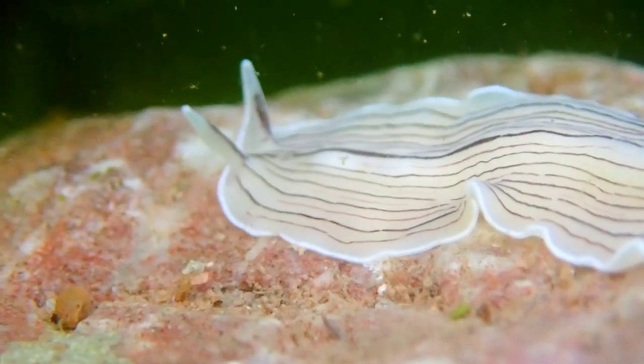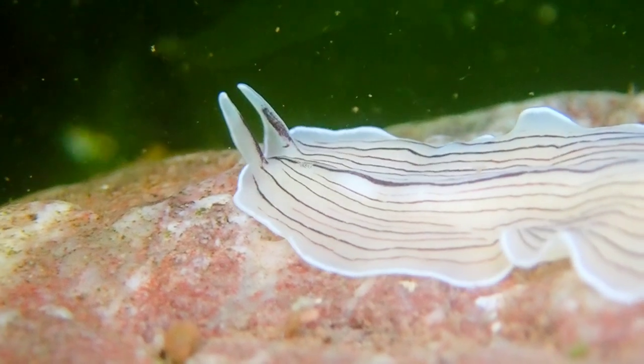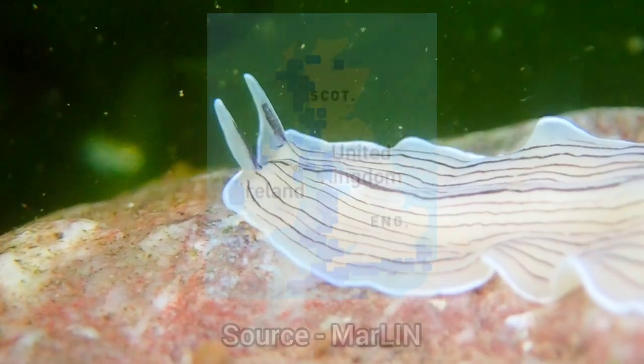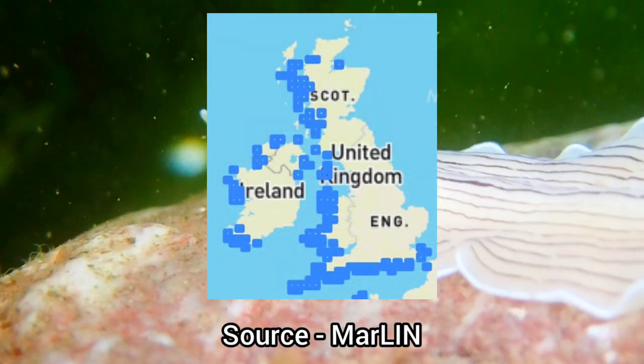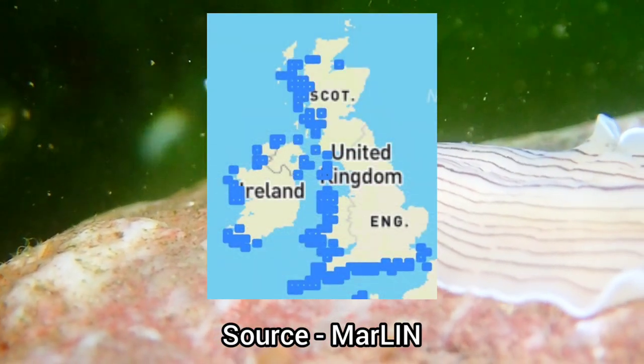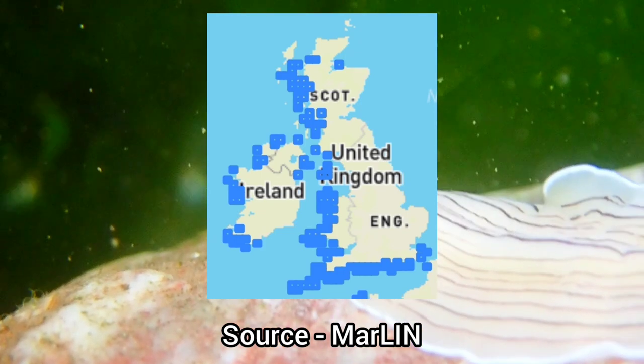The candy-striped flatworm has a fairly limited distribution around the UK, only being found on the south and west coasts.